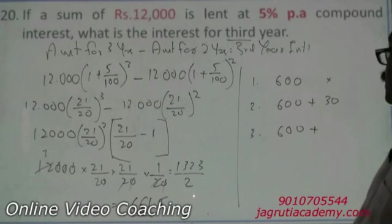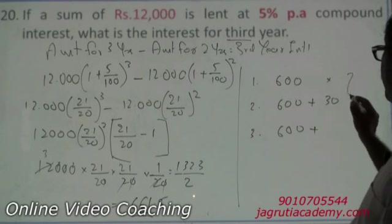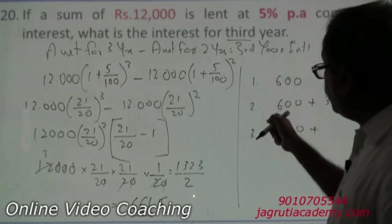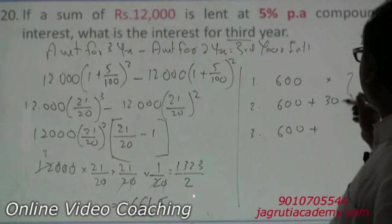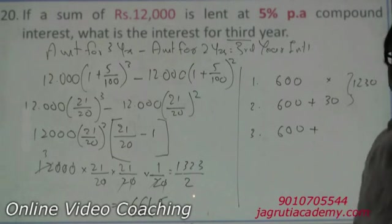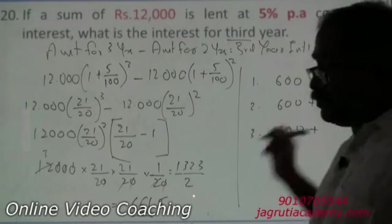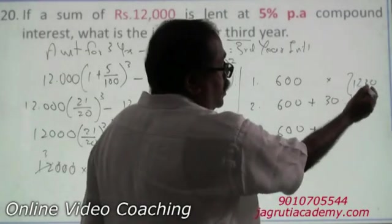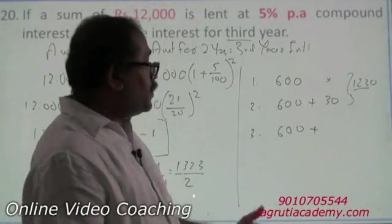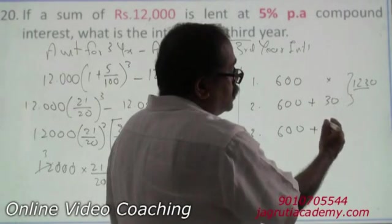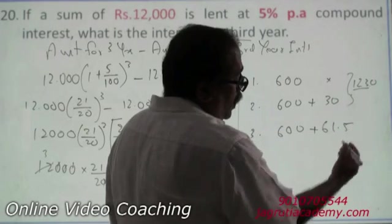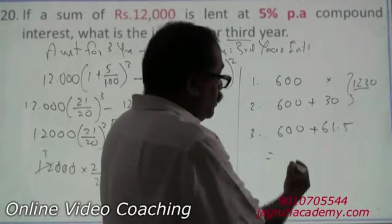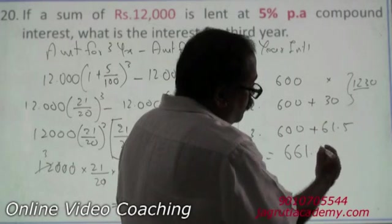What is the third year interest? The previous accumulated interest is 600 + 600 + 30 = 1230. Taking 5% of 1230: 10% is 123, so 5% is 61.5. The total interest for the third year is 600 + 61.5 = 661.5.